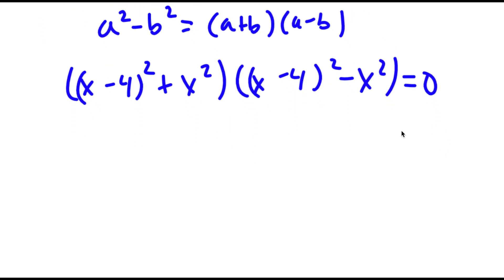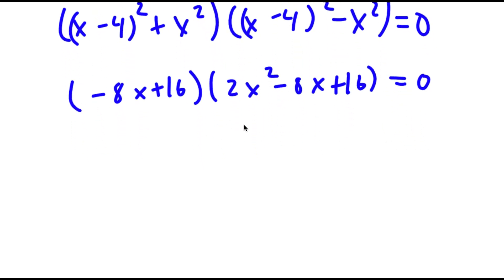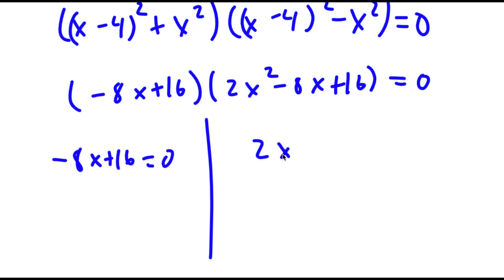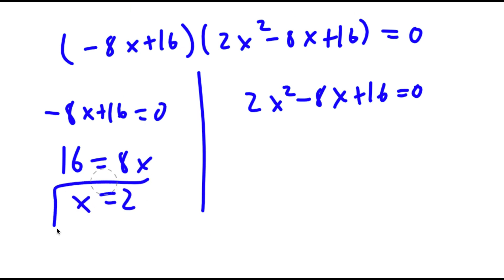Now if I expand this, I get negative 8x plus 16 times 2x squared minus 8x plus 16 is equal to 0. So this gives me two equations: I have negative 8x plus 16 is equal to 0, and I have 2x squared minus 8x plus 16 is equal to 0. For negative 8x plus 16 equals 0, I get 16 is equal to 8x, meaning x equals 2. So this is one solution.